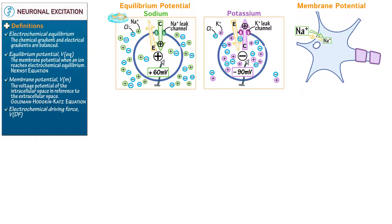Show that potassium has a low extracellular concentration and a high intracellular concentration. Show that at rest, potassium exits the cell via leak channels along its concentration gradient and include an opposing electrostatic gradient.